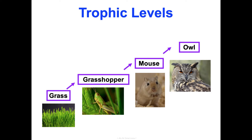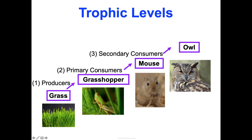Let's look at trophic levels on a food chain. Producers are always level one — the first level. Level two is your primary consumers: the first consumers, they eat producers. Level three is your secondary consumers — they eat primary consumers. Level four is a tertiary consumer. If something eats the owl, that would be level five, a quaternary consumer. So it can keep going. Remember, energy only flows one direction up the chain.